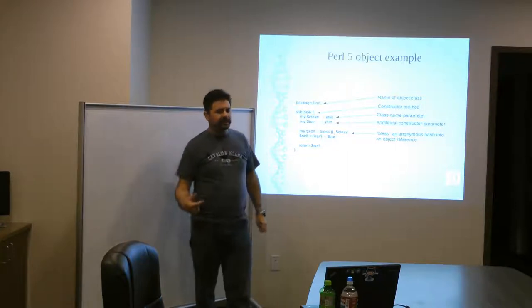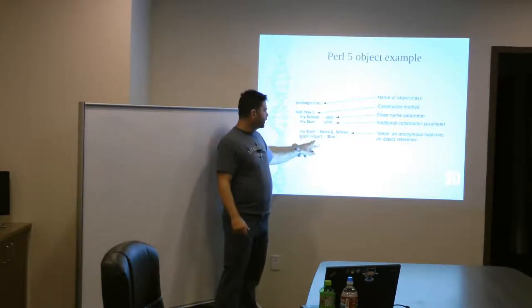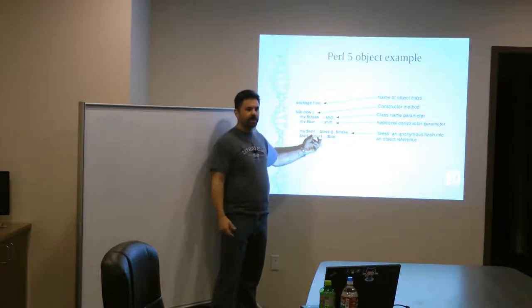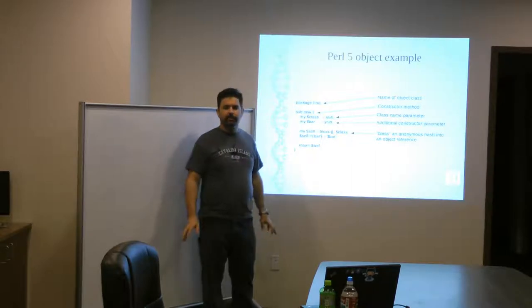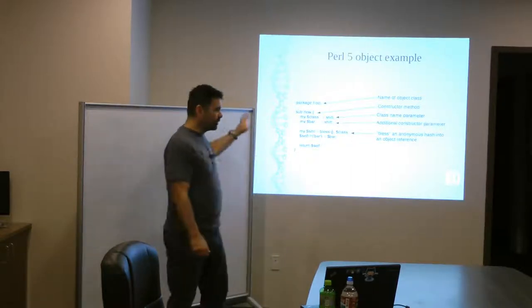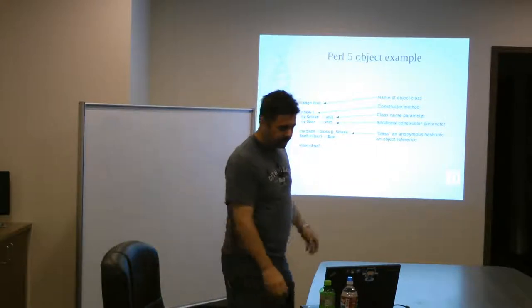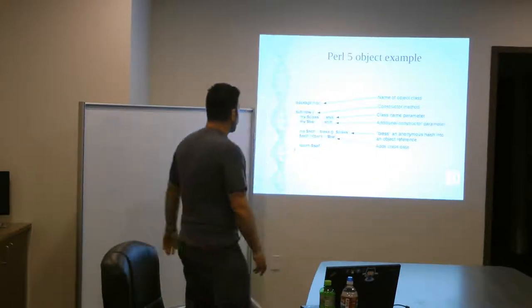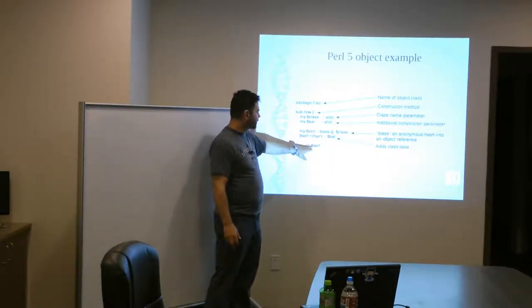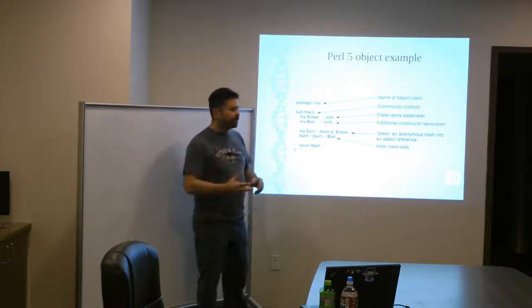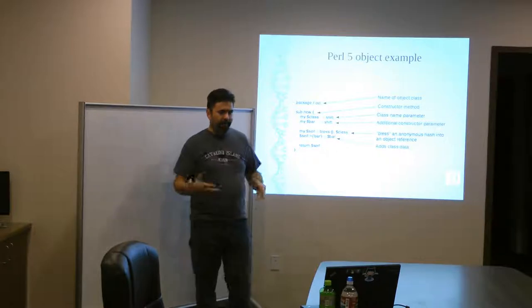One thing that you might expect is if in here we're storing bar in this hash, so it becomes a member variable in a sense. And you think, great, now that it's a member variable, the only way I can access it is through methods defined in this package. Not true. You can still access it just like a normal hash. And that's one of the complaints people have in that there's no privacy. And we'll talk about some ways that that's been dealt with. So yeah, down here we add the class data to the class. And then we return this self-object, the self-reference, and then that becomes our foo object wherever we want to use it.